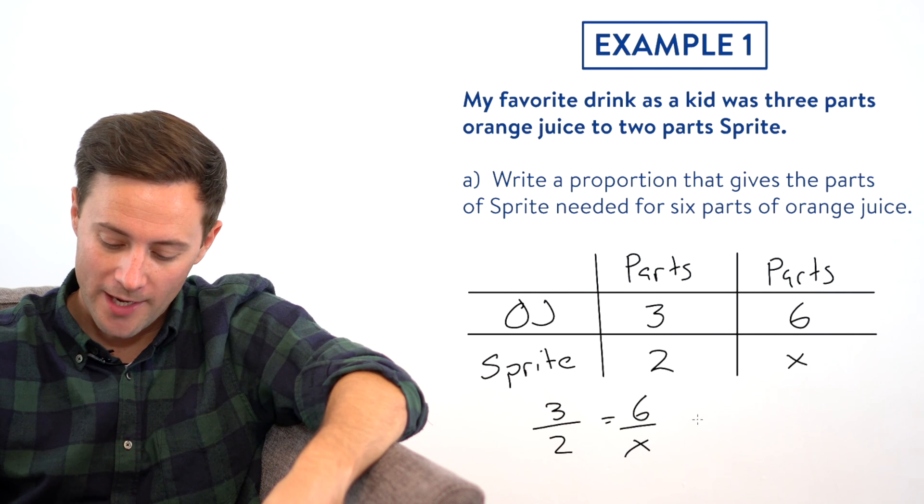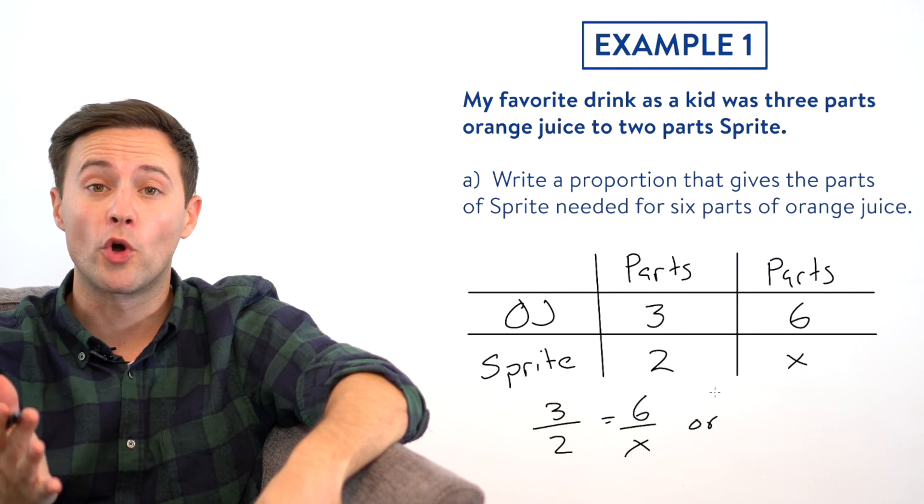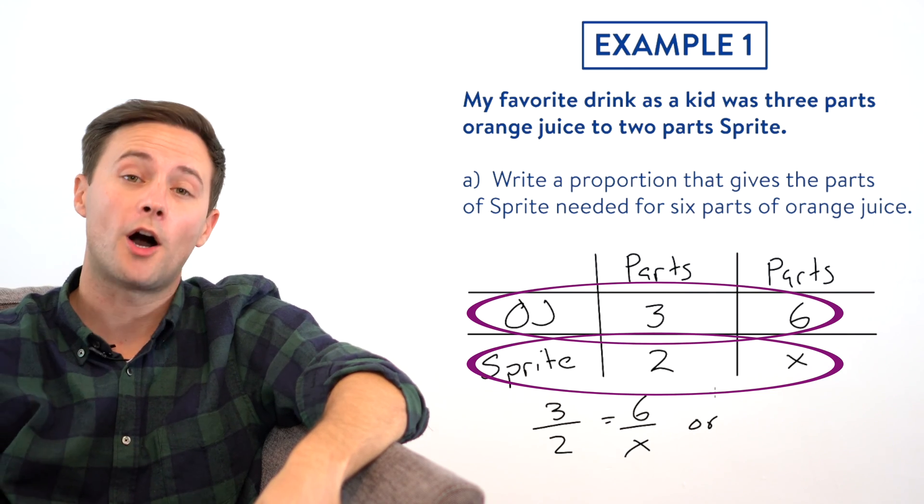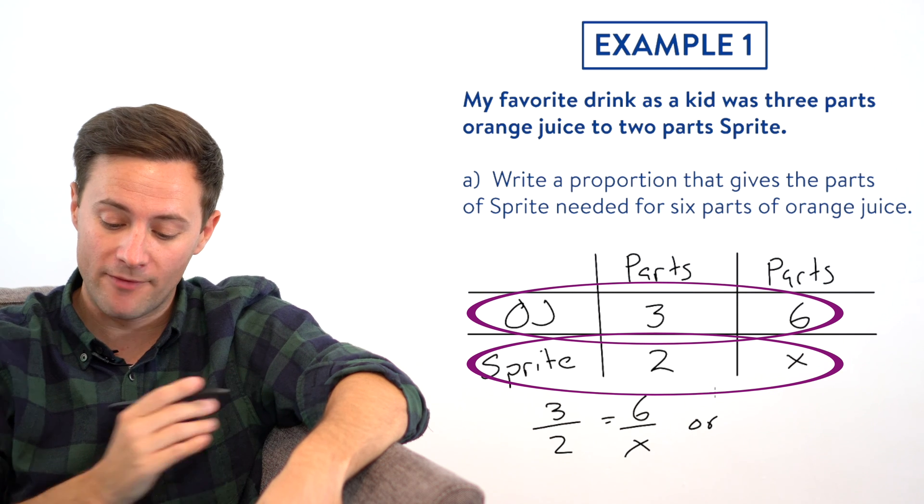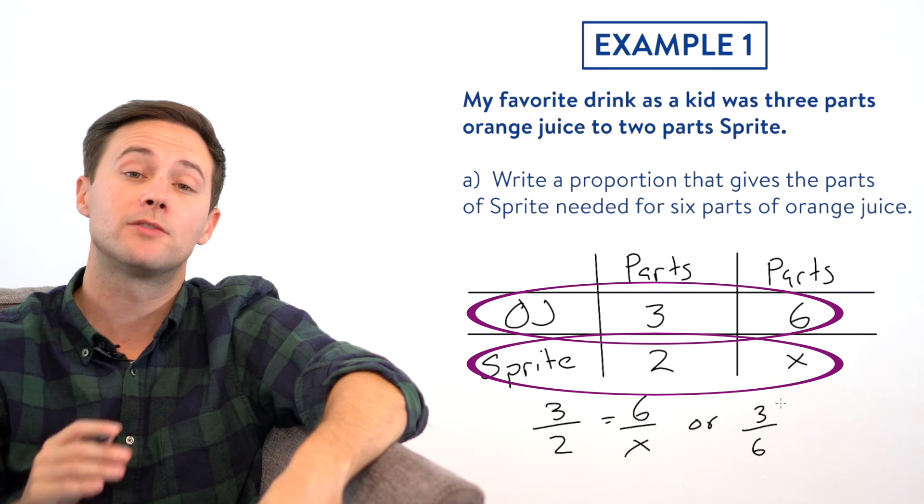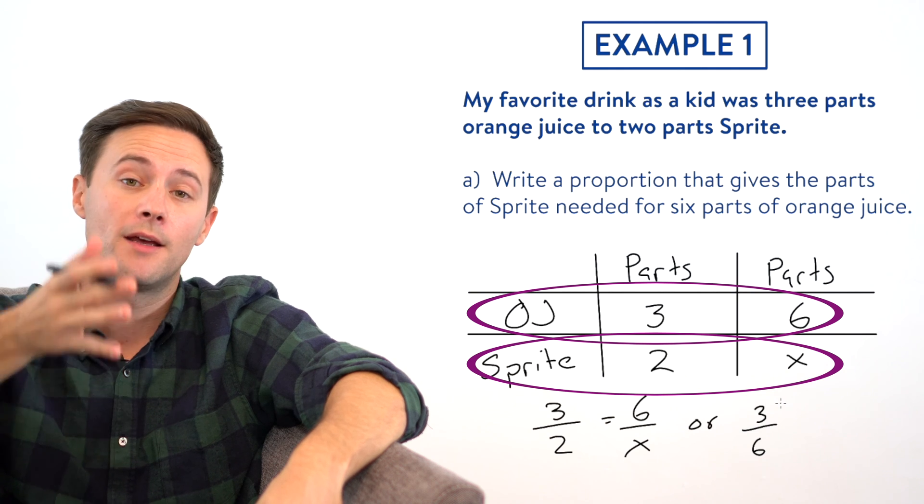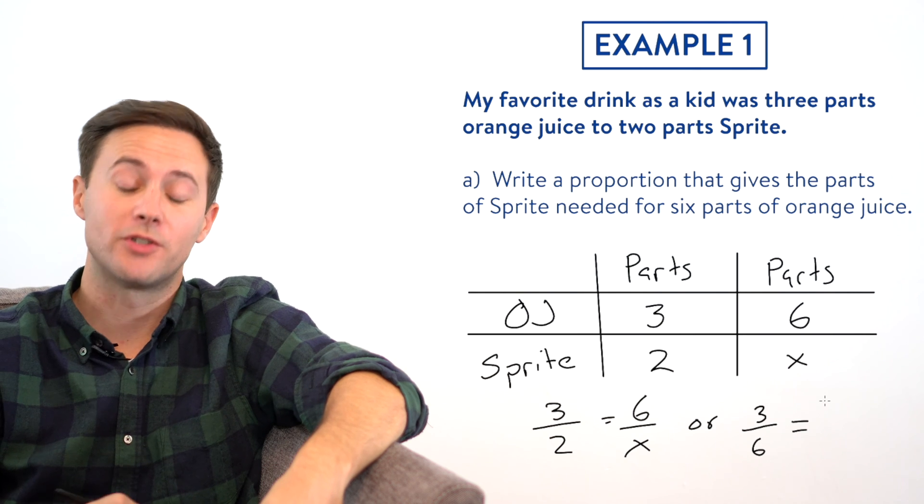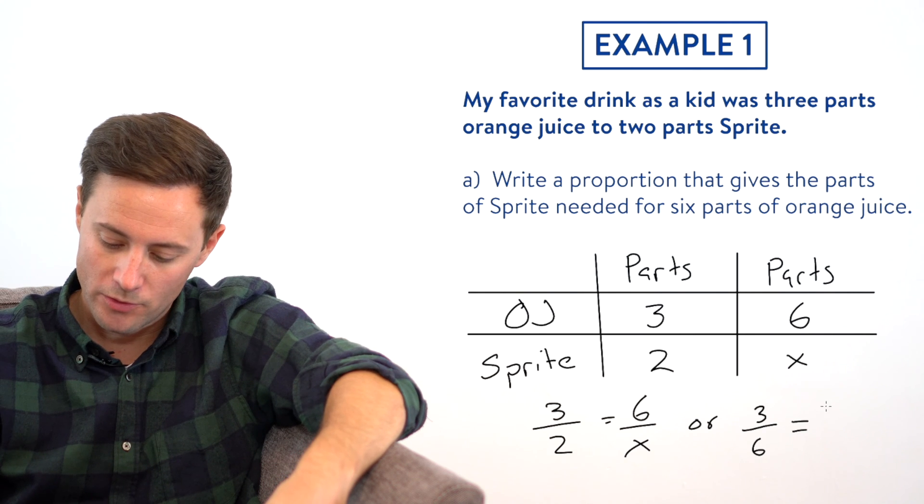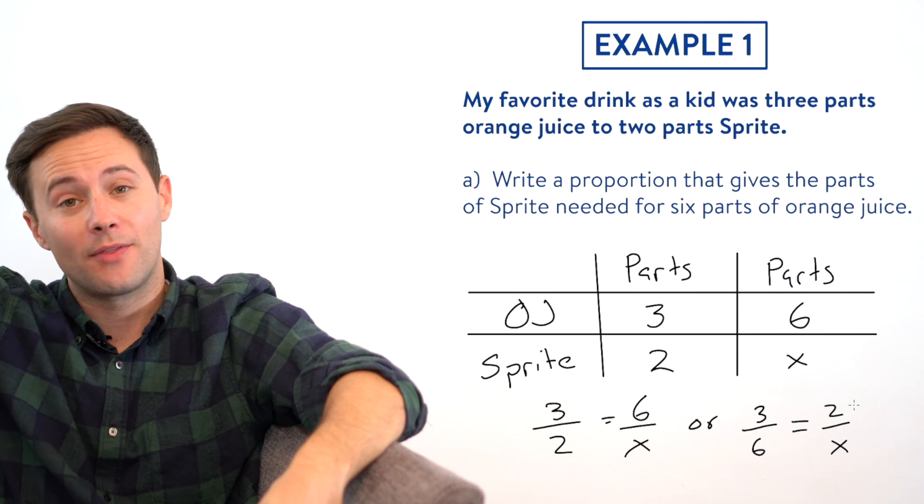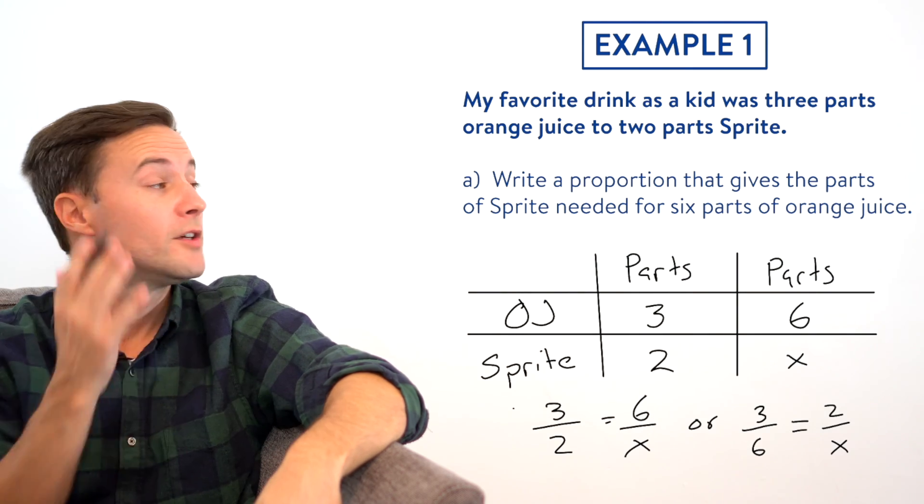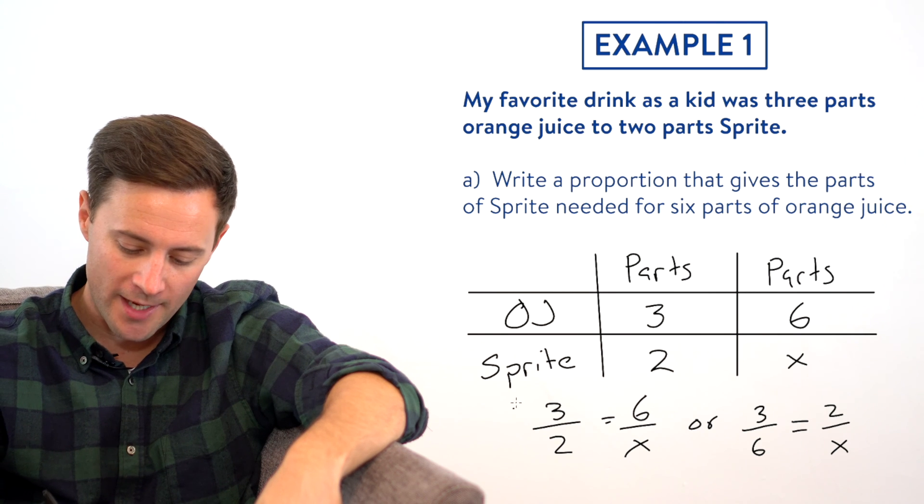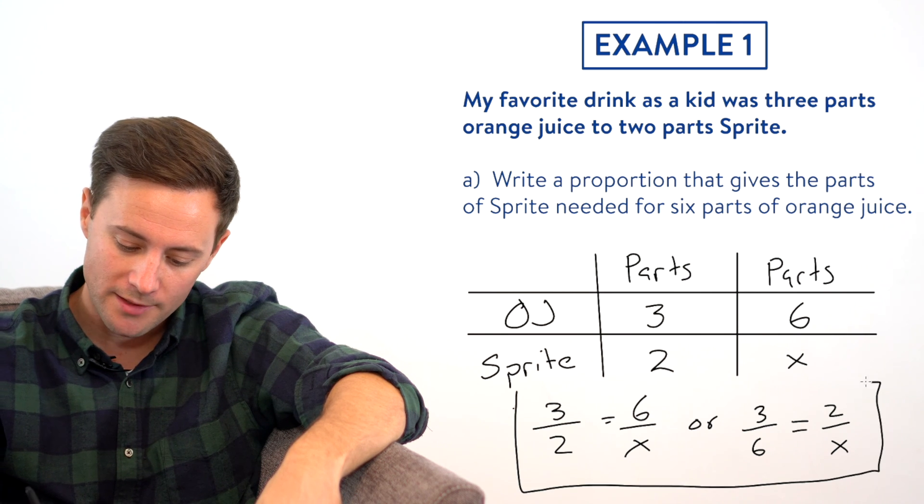The other way we could write a proportion is instead of using the columns, we could use the rows. So on the left side, we're going to have three to six, so the units on the left side match the parts of orange juice, is going to be equal to two over x. So now we've got the Sprite on the right side. So those are two ways to write a proportion for the exact same problem.